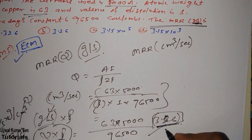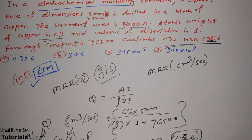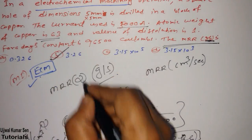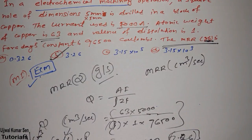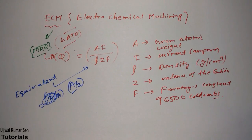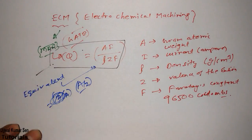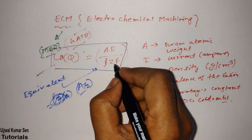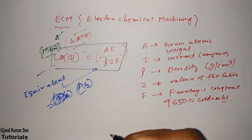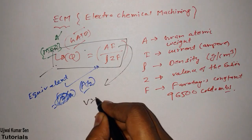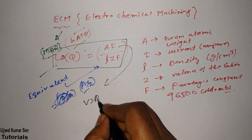So the answer is approximately 3.26 grams per second. Checking the options given in the question, option B is the correct answer. The most important thing in this topic is knowing the MRR formula and understanding all the variables within it.